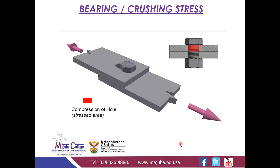Let's have a look at bearing stress, which is also known as crushing stress. We've got two ties connected by means of a bolt. If the bolt is stronger than the ties, the bolt is going to push itself out of the connection. The red area shown here is the area under stress — the bolt is pressing against the walls of the ties, so that red area is under compression.